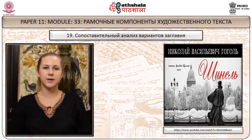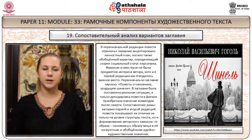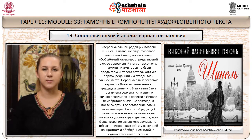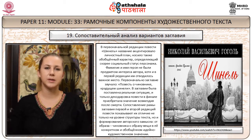Сопоставительный анализ вариантов заглавия. В первоначальной редакции «Повесть тишины» название акцентировало личностный план и носило обобщённый характер. Первоначально заглавие звучало «Повесть о чиновнике, крадущем шинели»: в нём была поставлена реальная ситуация, и только декодировка повести в финале приобретала значение возмездия после смерти. Сопоставление рамы заглавия первой и второй редакций повести показывает формирование авторского замысла – от образа чиновника к образу вещи в её конкретном и обобщённом идейно-художественном значении.